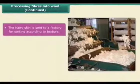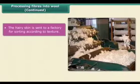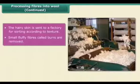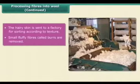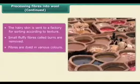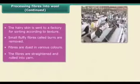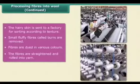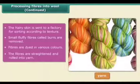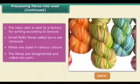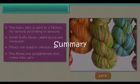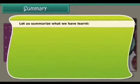The hairy skin is sent to a factory for sorting according to texture. Small fluffy fibers called burrs are removed. Fibers are dyed in various colors, because the natural fleece of sheep and goat is black, brown, or white in color. The fibers are then straightened and rolled into yarn, and finally the wool is ready to use.